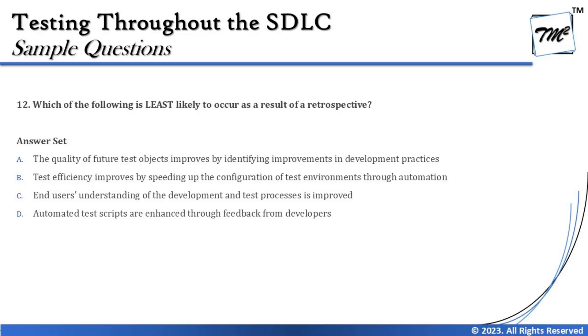The next question is number 12, and we shall be talking about the retrospective. It says: which of the following is least likely to occur as a result of a retrospective? Two important things to remember: number one, we are talking about retrospective; number two, we are talking about least likely. Words like best, most, and least are very important to reach the conclusion, because if you don't pay attention, you may end up with conflicting answers. During the exam, it's very easy to ignore these keywords.